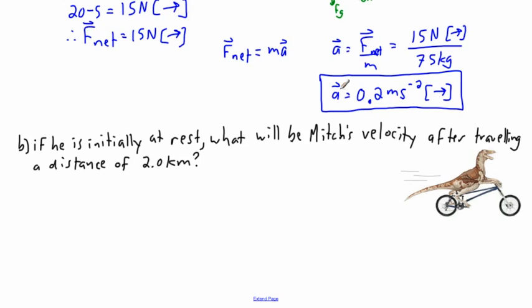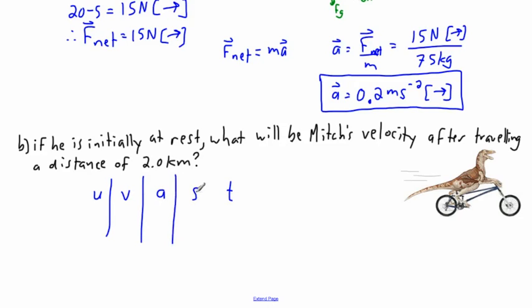Looking at different equations for accelerated motion, what I like to do is write down what everything actually means. So U is the initial speed, V is the final speed, A is the acceleration, S is the distance or displacement, and T is the time elapsed. I call this UVAST.